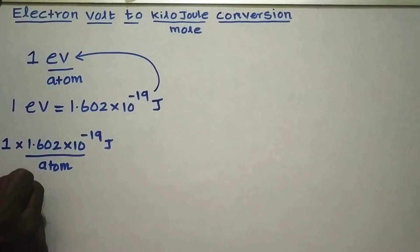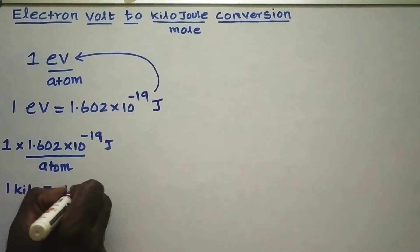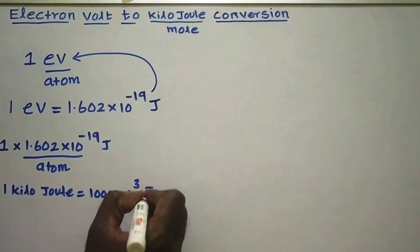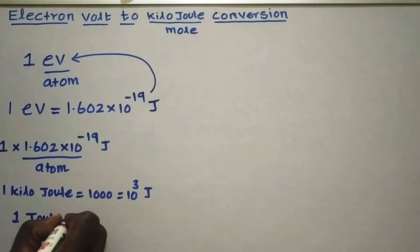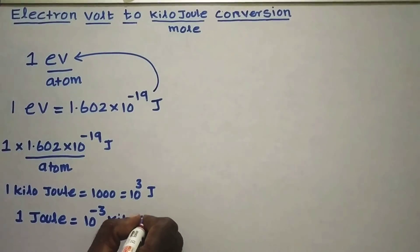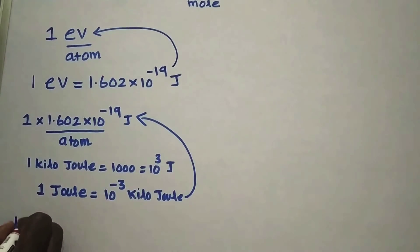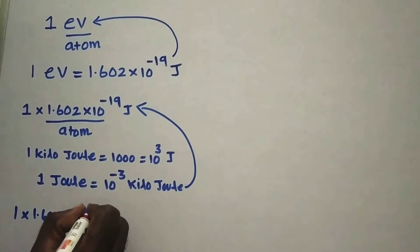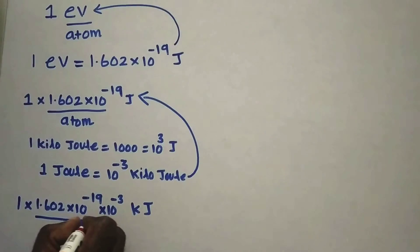It is well known that 1 kilojoule is equal to 1000, or 10³ joule. Therefore 1 joule is equal to 10⁻³ kilojoule. Now applying this value to the above conversion, it becomes 1.602 × 10⁻¹⁹ × 10⁻³ kilojoule divided by atom.